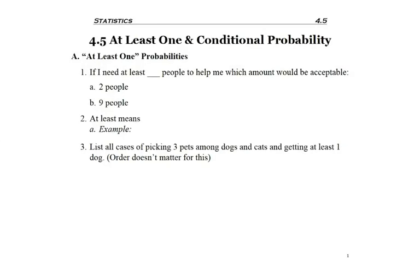So now, in section 4.5, we're going to look at two types of probability. The first type is where we're looking for at least one thing to occur, and then the second type is conditional probability.